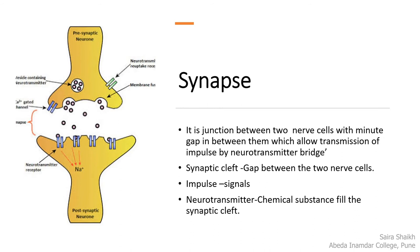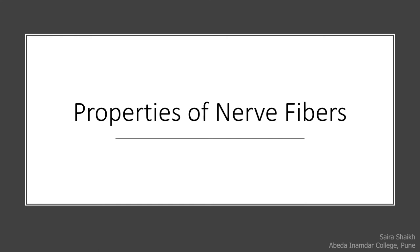We have studied about the structure and classification of the nerve cell. Now we will study about the junction, or synapse, present between nerve cells. The nerve cells have a minute gap, called the synaptic cleft. Through that synaptic cleft, the impulse is transmitted with the help of a neurotransmitter material. To understand the transmission of nerve impulse through synapse, we will first study the properties of nerve fibers.